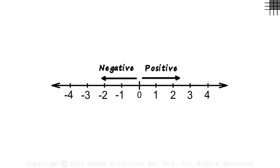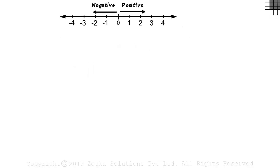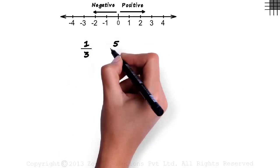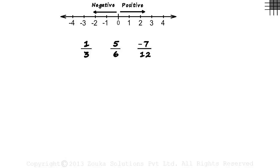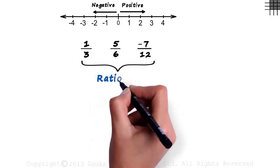Integers we are familiar with but what about numbers like these? 1 by 3, 5 by 6 or minus 7 by 12. Each of these are numbers but we don't use them as often as we use counting numbers. Such numbers are called rational numbers.